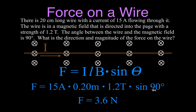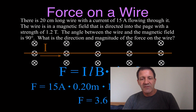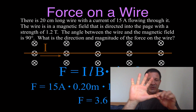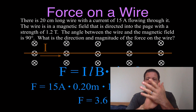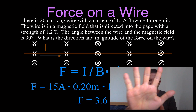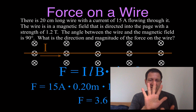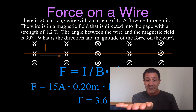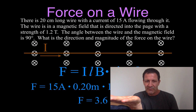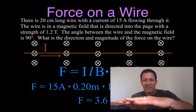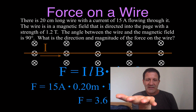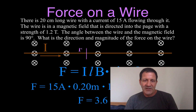Now, what about the direction of the force? We use the right-hand rule. Take the thumb and point it in the direction of the current. Take the fingers and point them in the direction of the magnetic field. Then the palm shows the direction of the force. So I take my right hand, point my thumb to the right — that's the current going left to right. My fingers, representing the magnetic field, go into the page. Therefore, my palm is facing up, which means the force on that wire is directed upward.